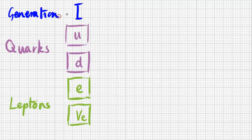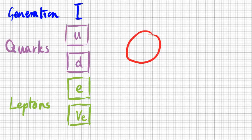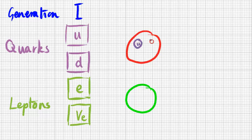This is what we call the first generation of matter — the four particles that make up most of the matter we see around us. Up quarks and down quarks make up protons and neutrons. The quark composition of a proton is two up quarks and one down quark; a neutron is two down quarks and one up quark.